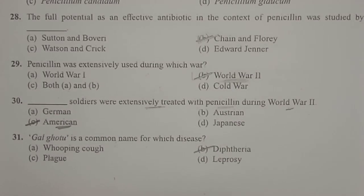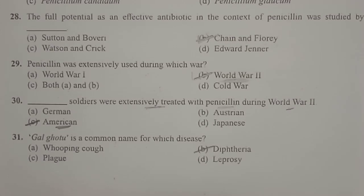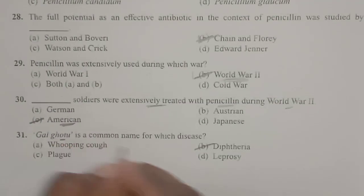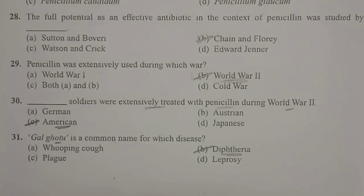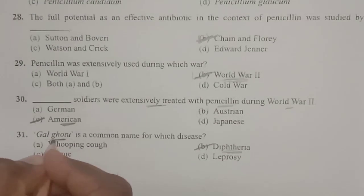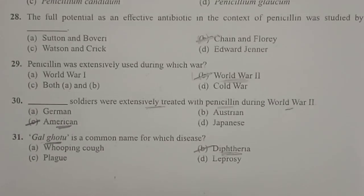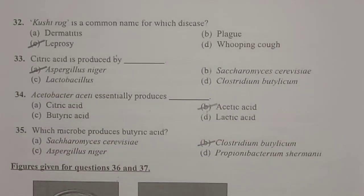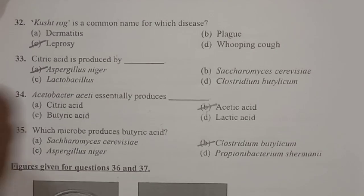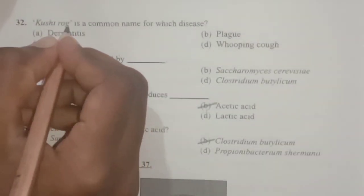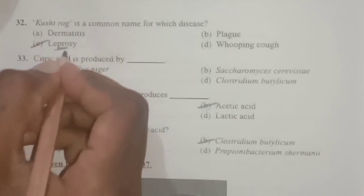Next: Galgodu is a common name for which disease? It is a common name for diphtheria. These are among the deadliest diseases seen before antibiotics. Next: Kushtha is a common name for which disease? It is the common name for the disease known as leprosy.